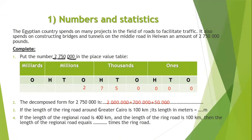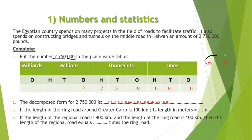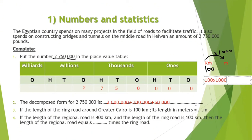Number 3: if the length of the ring road around Greater Cairo is 100 kilometers, what is its length in meters? To convert from kilometers to meters, we know that 1 kilometer equals 1,000 meters. So to convert, you multiply by 1,000. So 100 kilometers multiplied by 1,000 gives us 1 followed by 5 zeros, which equals 100,000 meters.